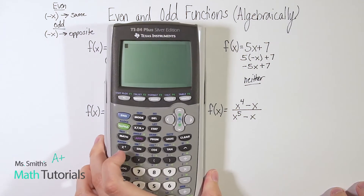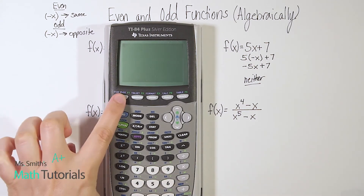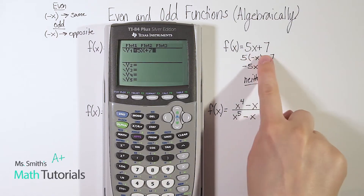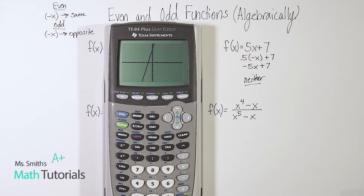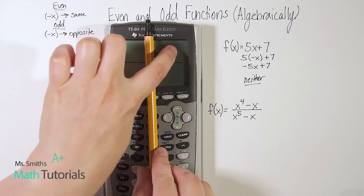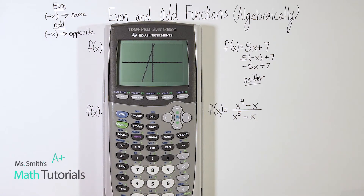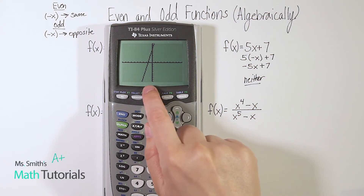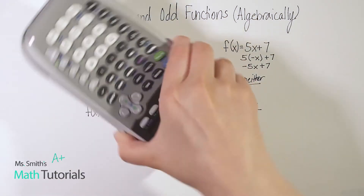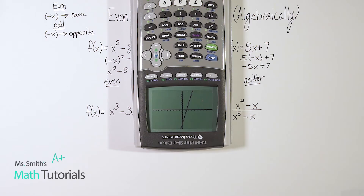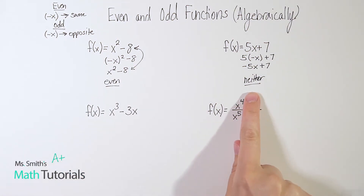Let's check it using our calculator just to be sure. So we go to our y equals, clear out what was previously in there, and enter 5x plus 7. I can tell this is not mirrored across the y axis because it would have to be perfectly the same on one side and the other, and it's not. If I were to flip this upside down — notice how I have a wide space at the bottom and a little space up top — if I flip it, now I've got wide space up top and little space at the bottom. If this was truly odd, it would be the exact same proportion. So this confirms that this is neither.